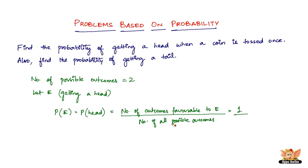The number of outcomes favorable to getting a head is just one, out of two possible outcomes — head or tail. So it is one by two, which is 0.5. Similarly, the probability of getting a tail is also one out of two possible outcomes. So the probability of getting a head or a tail when a coin is tossed once is exactly 1/2 or 0.5.